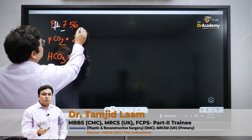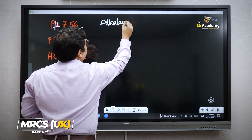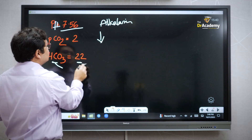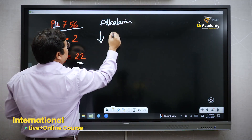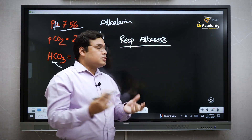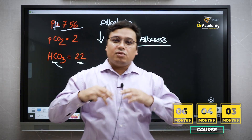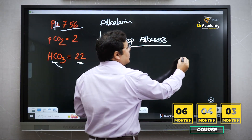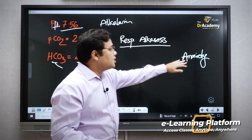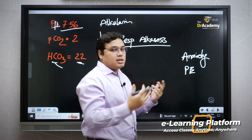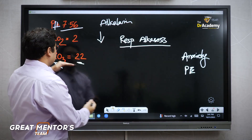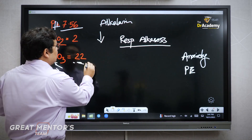Scenario two: pH is 7.56 — this is alkalosis. CO2 level is low, and bicarbonate is normal. This is respiratory alkalosis. When can this happen? In hyperventilation — you are taking too much breath, respiratory rate is very high, you are pushing CO2 out of the body. The causes include anxiety and pulmonary embolism. The body will try to compensate through the kidney, so bicarbonate will need to go down over time.